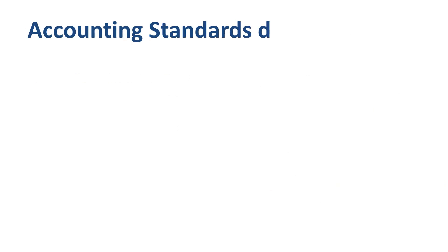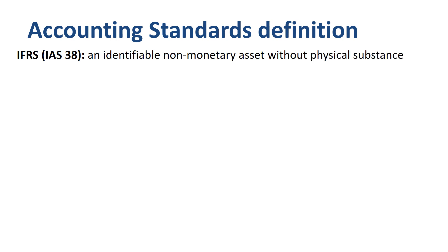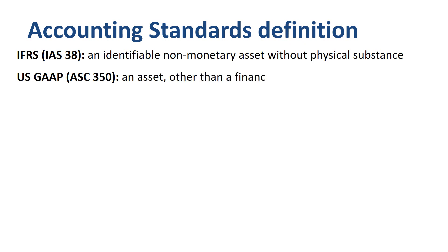In the International Financial Reporting Standards, or IFRS, an intangible asset is defined as an identifiable non-monetary asset without physical substance. In US GAAP, an intangible asset is defined as an asset other than a financial asset that lacks physical substance.